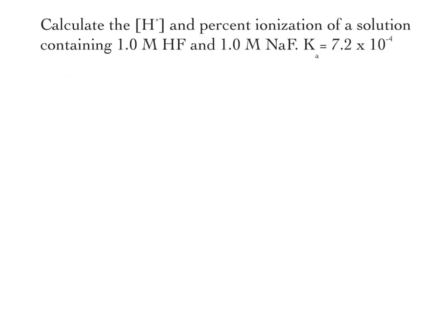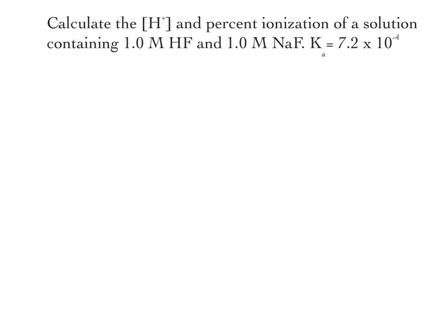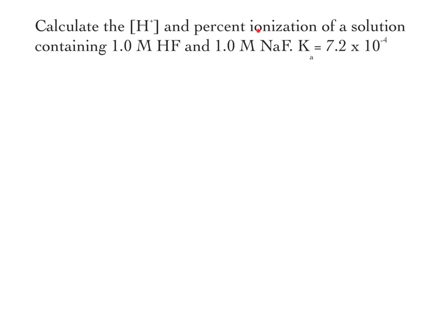Let's apply the common ion effect to a calculation. Here we need to calculate the H⁺ concentration as well as the percent ionization of a solution containing 1.0 M HF and 1.0 M sodium fluoride. In this context, we are looking at the behavior of HF, and we are adding sodium fluoride, which contains a common ion found in the ionization products of HF. The first thing we do is write out the ionization of HF into H⁺ and F⁻.